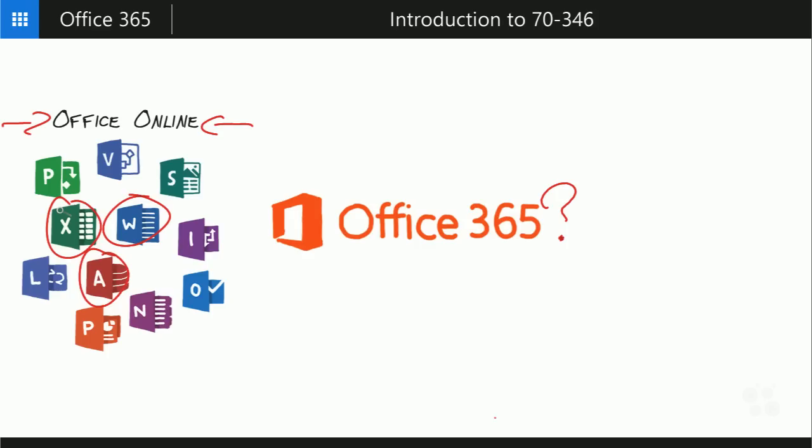That's what the cloud means — you can access Office Online from your desktop, laptop, home computer, tablet, or smartphone. Wherever you are and whatever device you're using, you can get access to these Office Online products. But Office 365 offers more than just that. Users can be licensed to download this software to their desktop instead of using the online version, on both Windows and Macintosh, installing on up to five different devices.